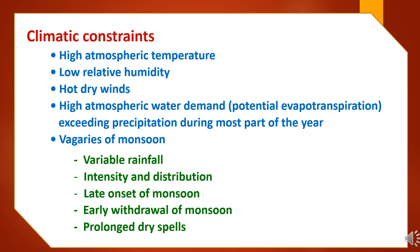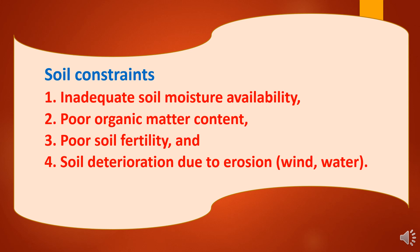Climatic constraints include high atmospheric temperature, low relative humidity, hot dry winds, and high atmospheric water demand because of high potential evapotranspiration exceeding precipitation during most of the year. Additionally, vagaries of the monsoon cause variable rainfall, intensity, and distribution of rainfall, late onset of monsoon, early withdrawal of monsoon, and prolonged dry spells.